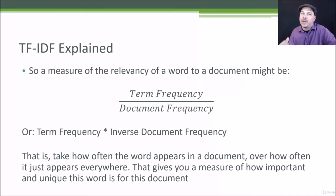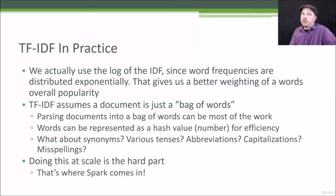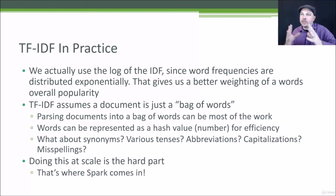That's TF-IDF. It stands for term frequency times inverse document frequency, which is just a fancy way of saying term frequency over document frequency — how often does this word occur in this document compared to how often it occurs in the entire body of documents. That's all TF-IDF means. In practice, we use the actual log of the inverse document frequency instead of the raw value, because word frequencies in reality tend to be distributed exponentially, so taking the log gives us a slightly better weighting of words given their overall popularity.